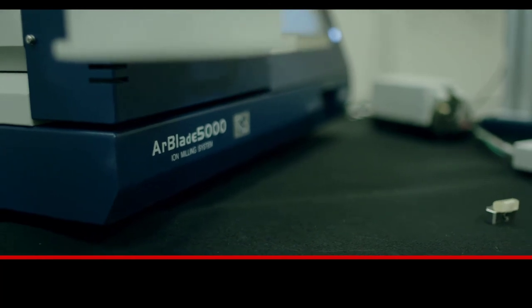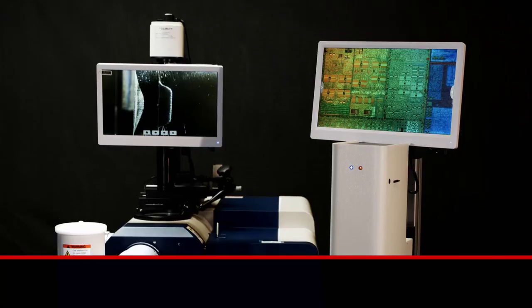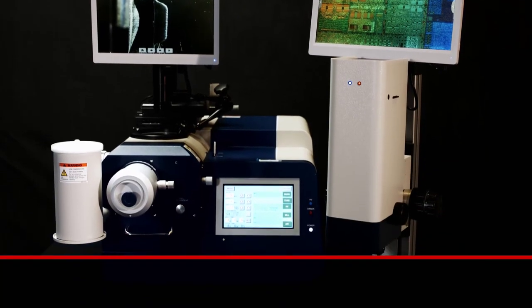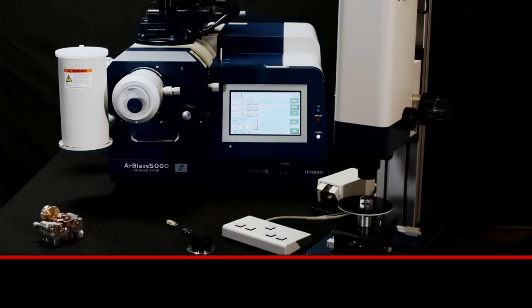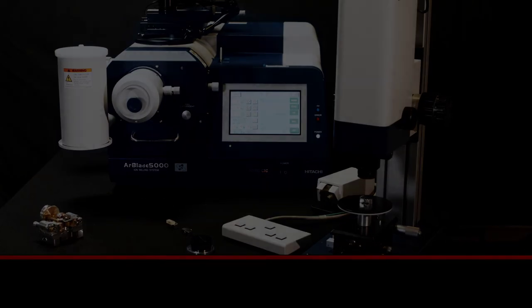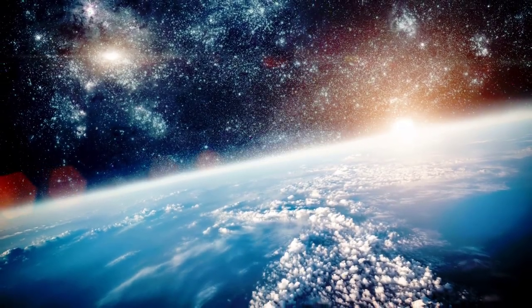The ArBlade 5000 is a hybrid, broad-ion beam polishing instrument capable of creating cross-sections of samples and creating a finely polished surface by flat milling. The ArBlade 5000 works to reveal the fine internal and surface structures of a wide range of materials. Think outside the lab. Hitachi. Bringing modern technology to a modern world.